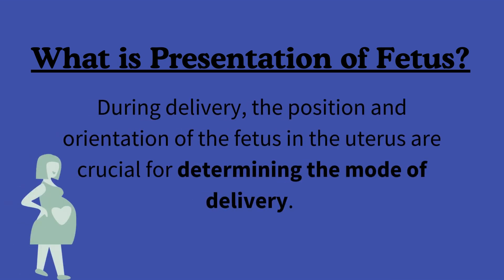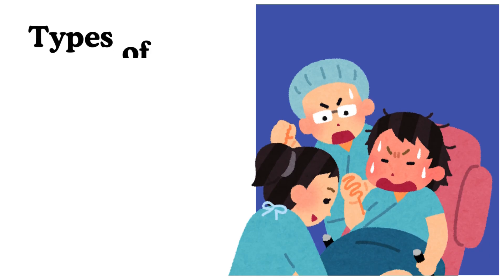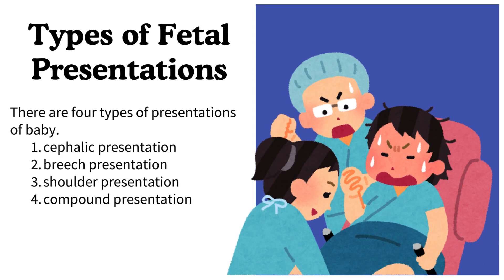During delivery, the position and orientation of the fetus in the uterus are crucial for determining the mode of delivery. There are four types of presentations of baby: cephalic presentation, breech presentation, shoulder presentation, and compound presentation.